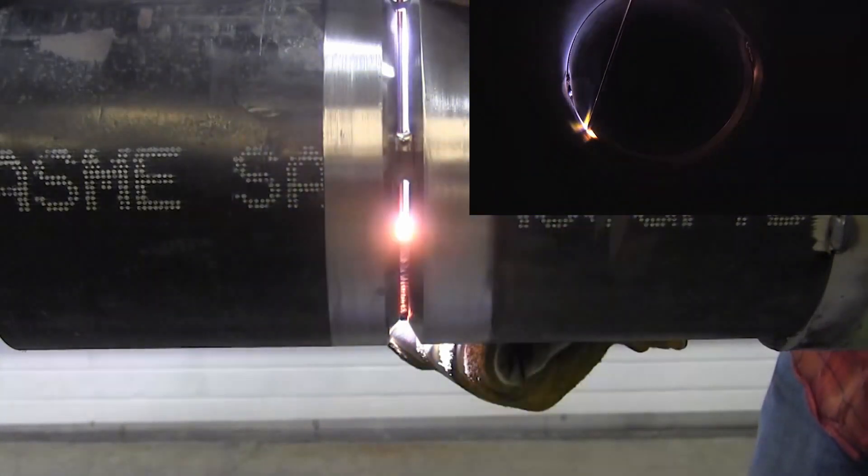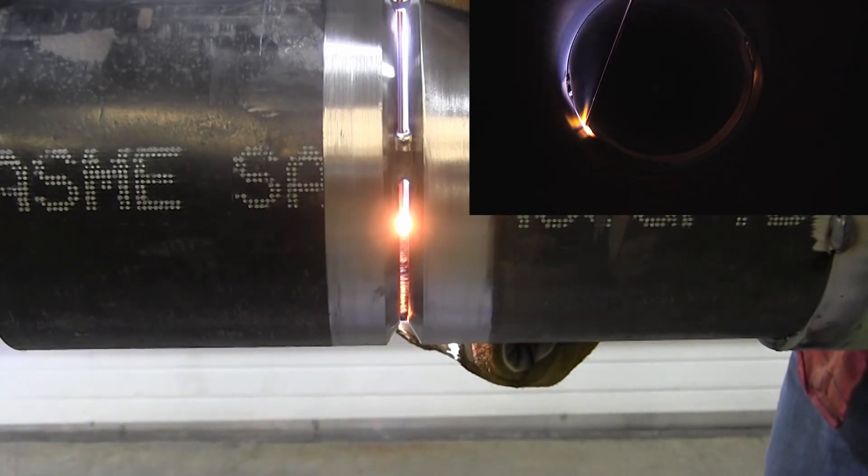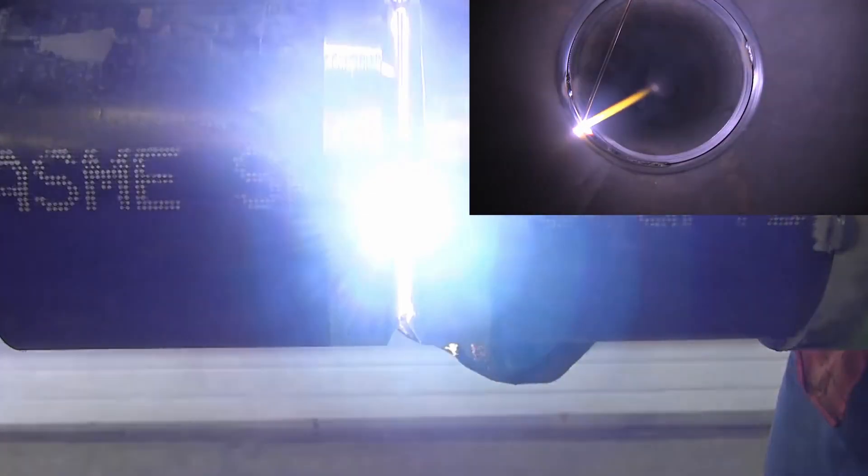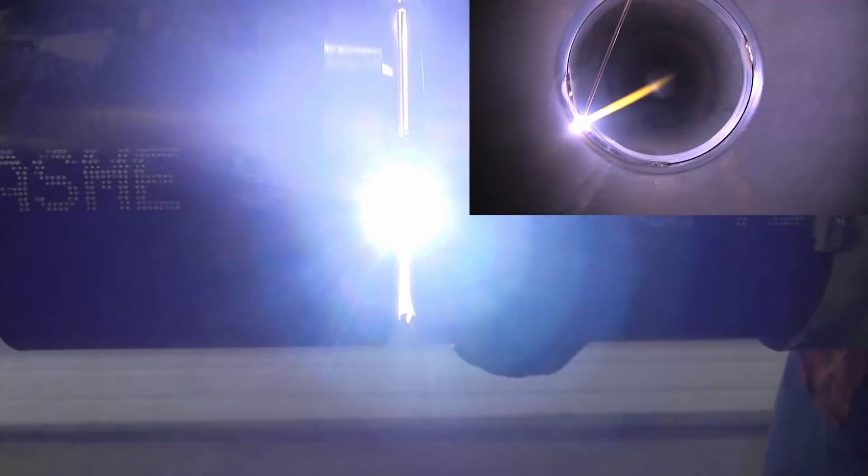There's a couple of times in here like right now you can see I just got my filler metal stuck. It's not a big deal, you just don't freak out. Just bring the torch over to where the filler metal is and try to melt that section of pipe and it'll usually break that filler metal loose.